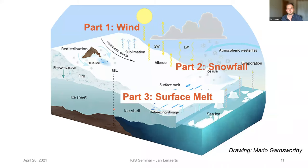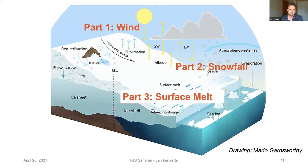I'll talk about three different parts. First, wind — what's the importance of wind for surface mass balance? Part two is about snowfall, which is our input term. And then part three is in particular about surface melt and its impact on ice shelves on Antarctica. This drawing has been made by Marlowe Gonsworthy, who is a very talented author and artist who helped us sketch the most important processes of surface processes on ice sheets.